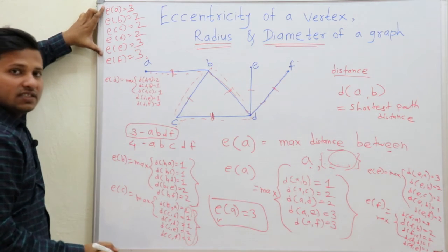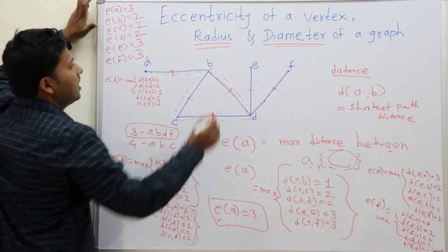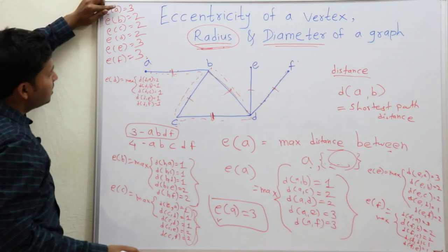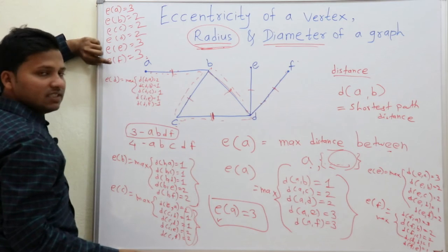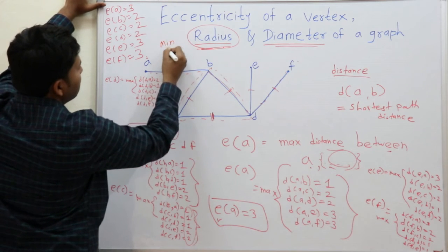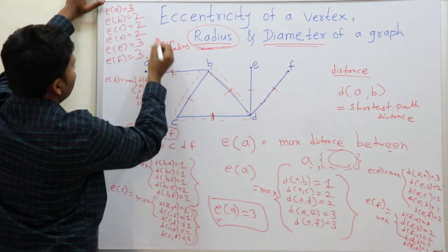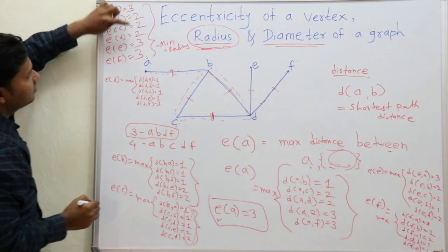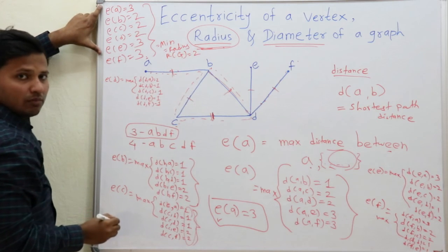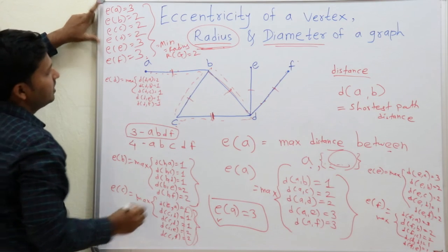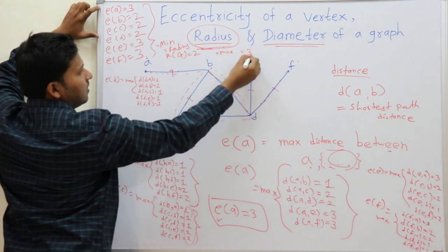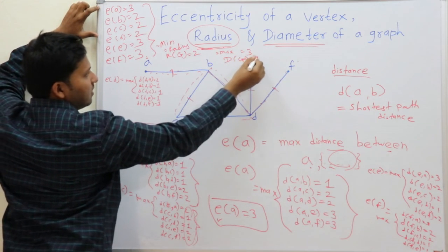These are the eccentricities of all vertices. The radius is the minimum of these eccentricities — the minimum eccentricity is 2, so the radius of this graph is 2. The maximum of these eccentricities is the diameter — the maximum is 3, so the diameter of this graph is 3.